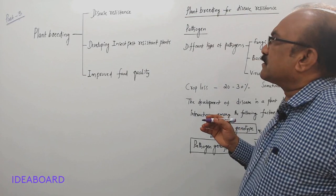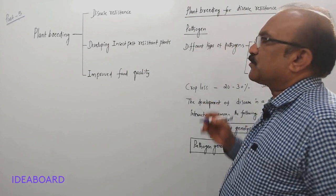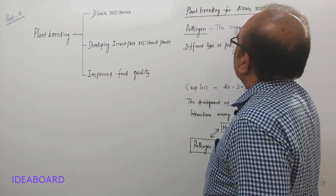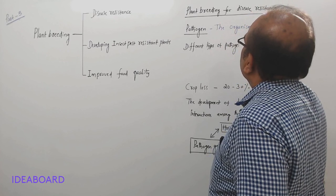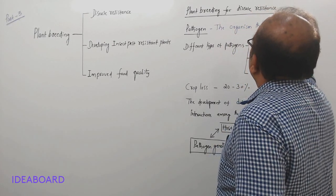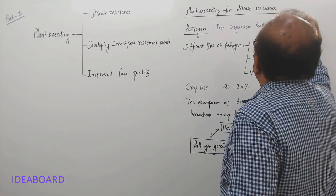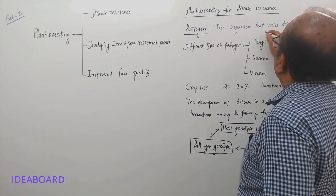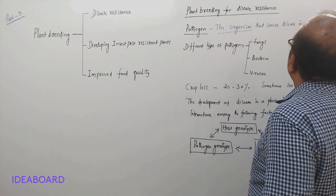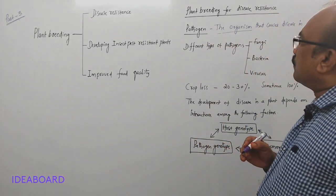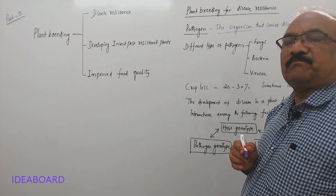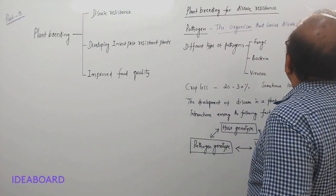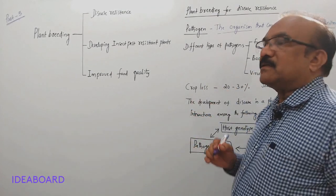Plant breeding for disease resistance. The organism which causes disease in other organisms is called a pathogen. The other organism — in this case the plant — is called the host. The organism which is infected by the pathogen is called the host.